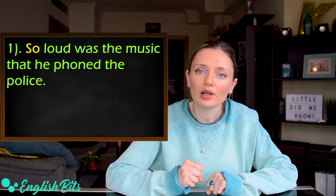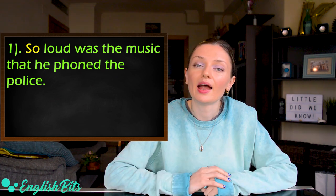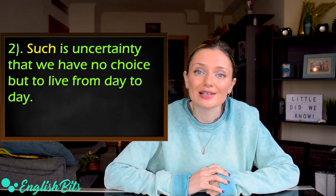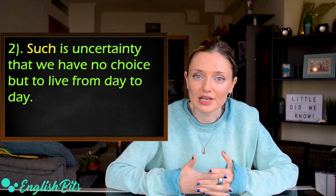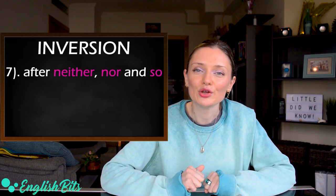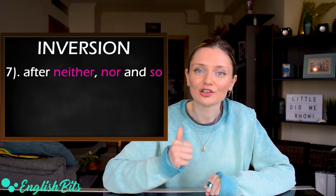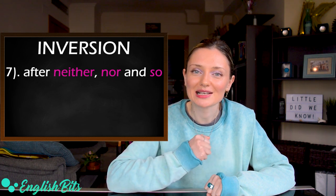And now two examples. The first one, so loud was the music that he phoned the police. And one more example, such is uncertainty that we have no choice but to live from day to day. Let's move on to our case number seven. We use inversion after neither, nor, and so.